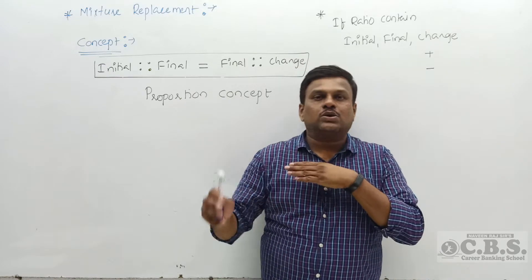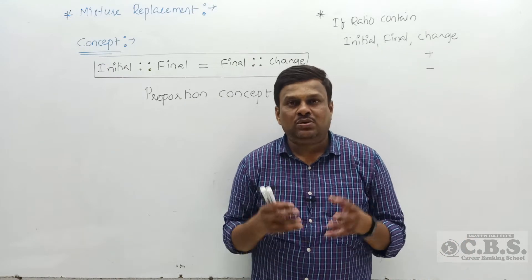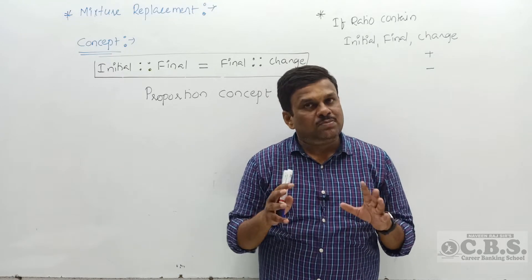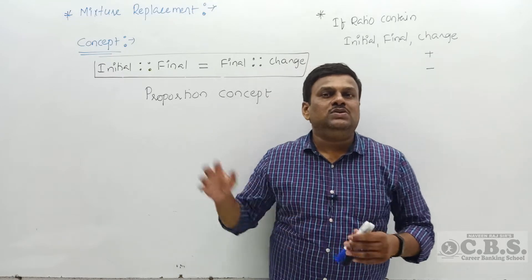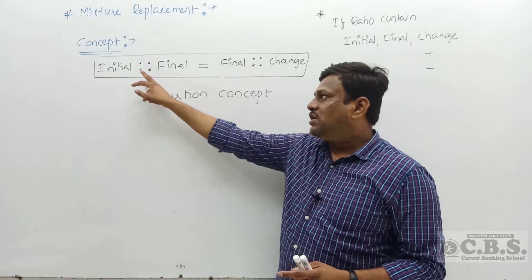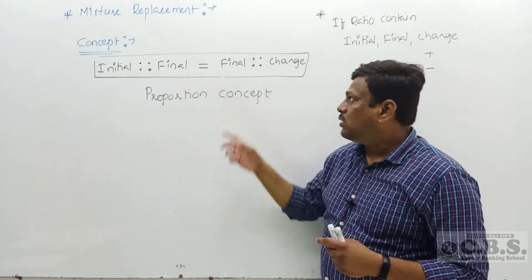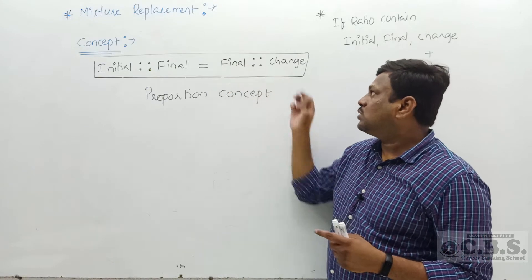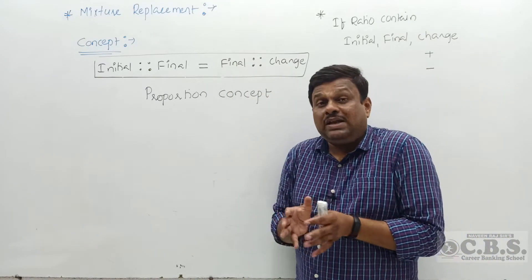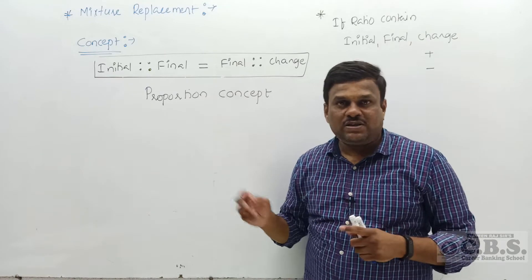It is not only used for mixtures replacement; it is also used for different questions like income ratio, expense ratio, and savings ratio. The concept is: initial ratio is proportional to final ratio, which is equal to final ratio proportional to change ratio. I will explain this in detail now through questions.